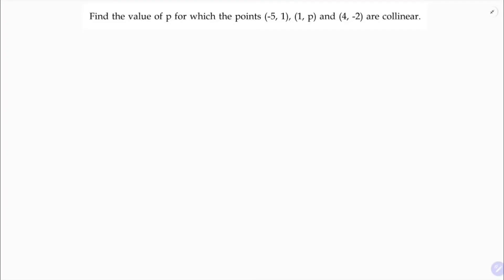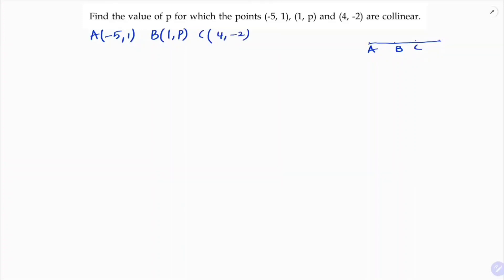Find the value of p for which the points (-5, 1), (1, p) and (4, -2) are collinear. Here the points are collinear — three or more points are said to be collinear if they lie on the same straight line. So we label A as (-5, 1), B as (1, p), and C as (4, -2).